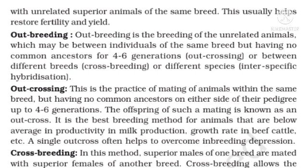Outbreeding is breeding of unrelated animals, which may be between individuals of the same breed but having no common ancestor for four to six generations — this is called outcrossing — or between different breeds, called crossbreeding, or between different species, called interspecific hybridization. Outcrossing is the practice of mating animals within the same breed but having no common ancestor on either side of their pedigree up to four to six generations. The offspring of such a mating is known as an outcross. It is the best breeding method for animals that are below average in productivity in milk production, growth rate in beef cattle, etc. A single outcross often helps to overcome inbreeding depression.